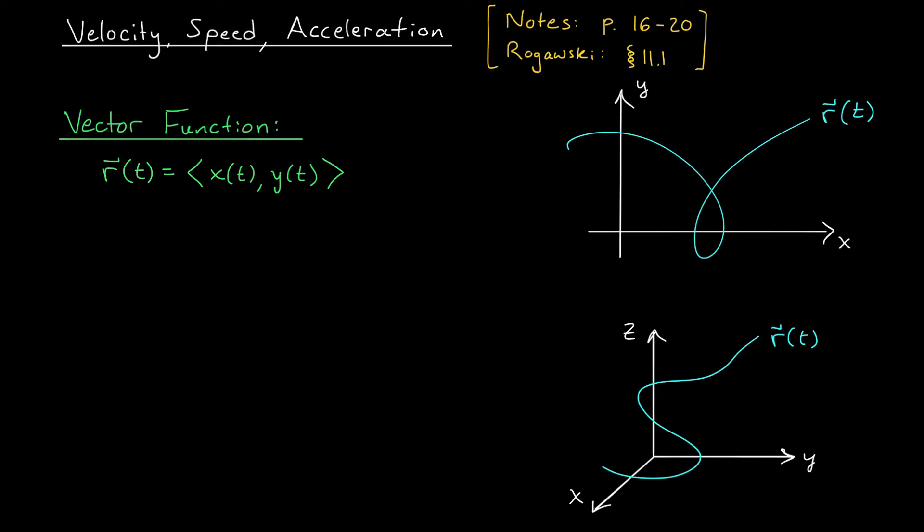When I think about these vector functions, I often like to go back to the bug example. I pretend that t is time, and as time passes, a little bug walks along my parametric curve. At time t, the vector function r of t tells me the bug's position.